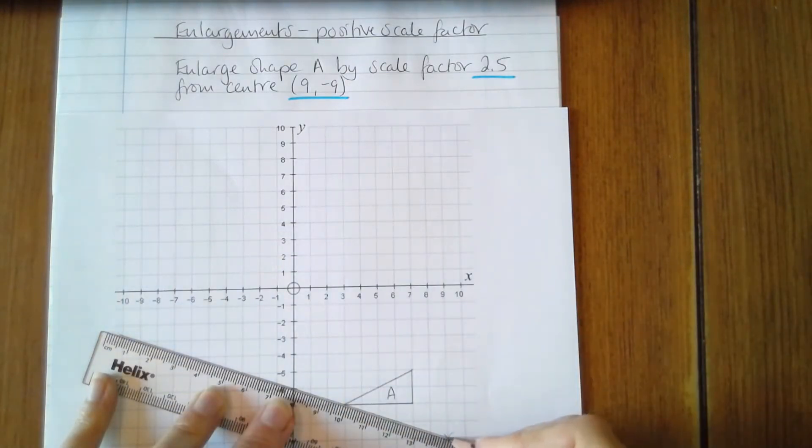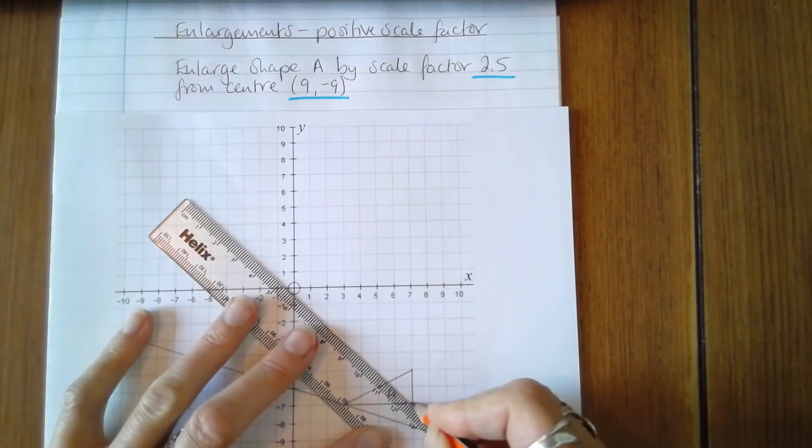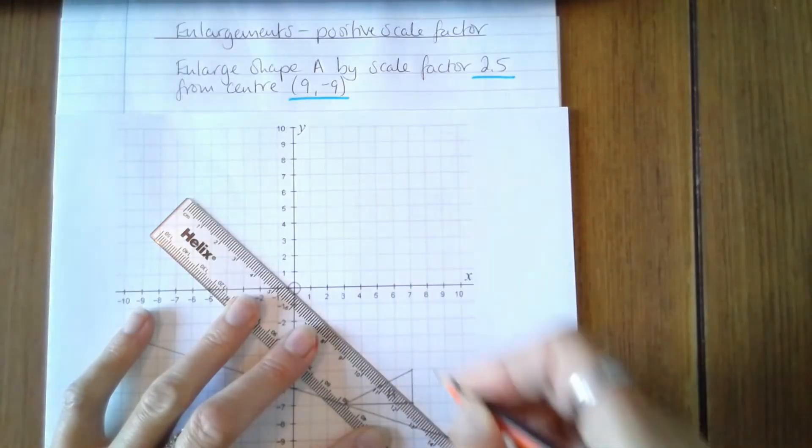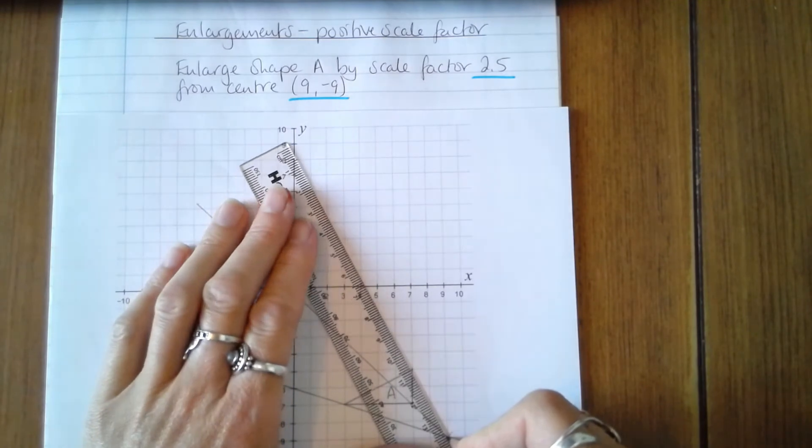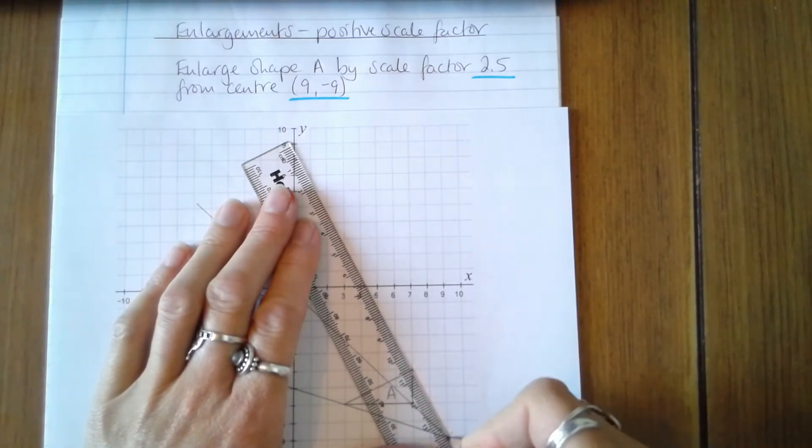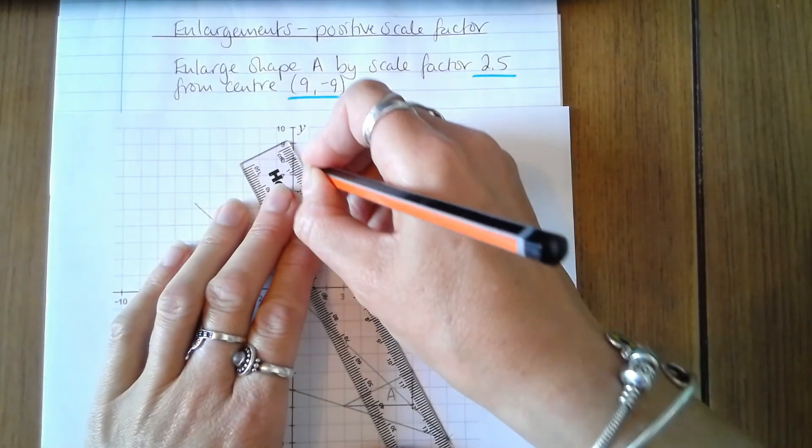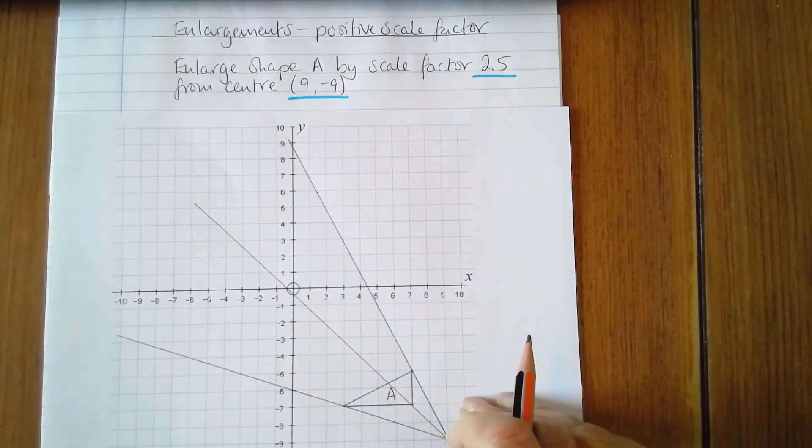These guidelines will help me to verify that the position of my new vertices are correct. Take care when placing your ruler because it's very difficult to get these guidelines straight, especially when the original shape is very close to the center and the new shape is very far away. We just need to make sure that we are on or near those guidelines when we place our new points.